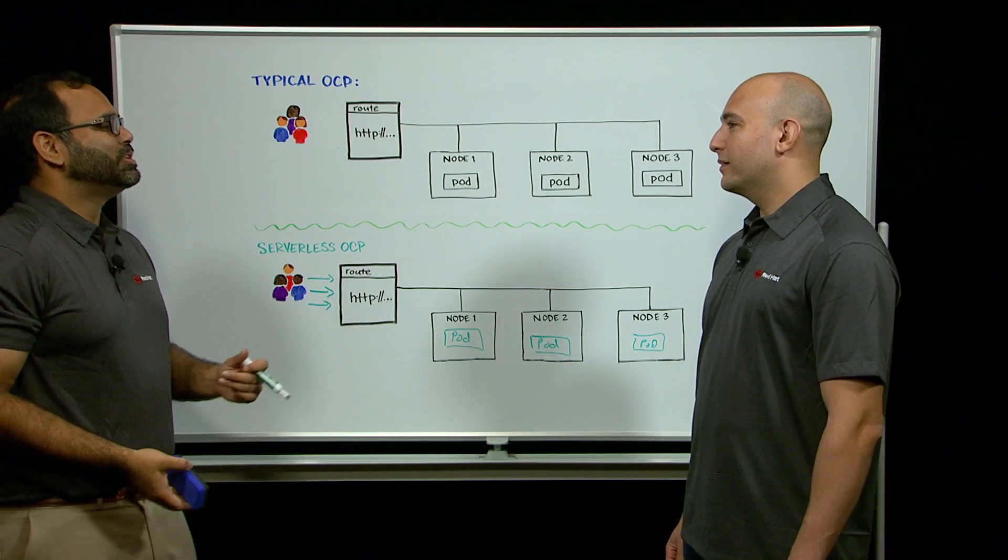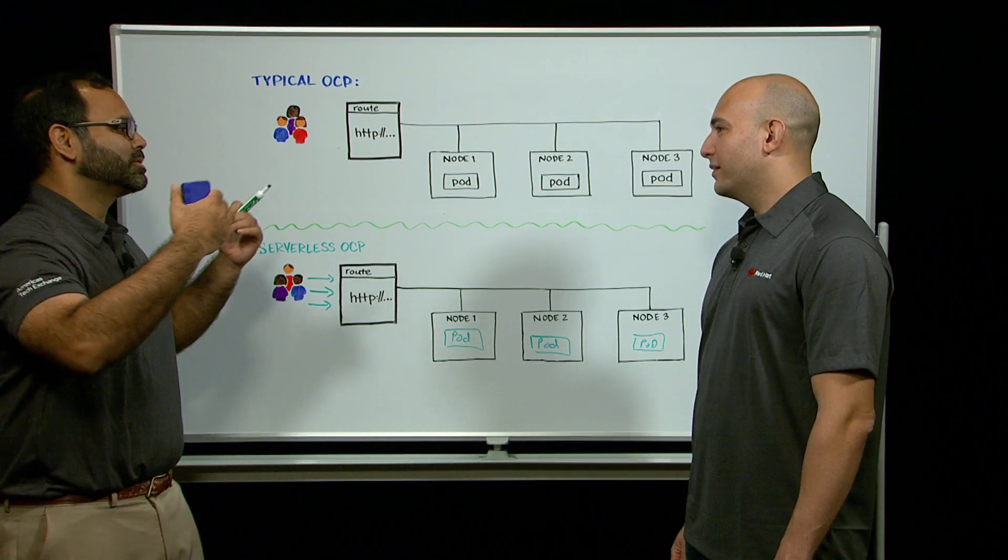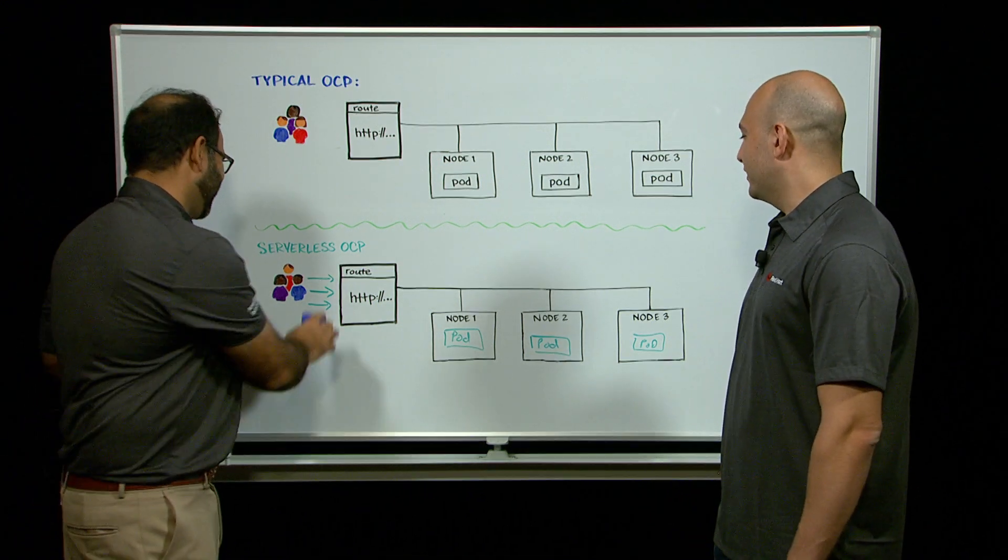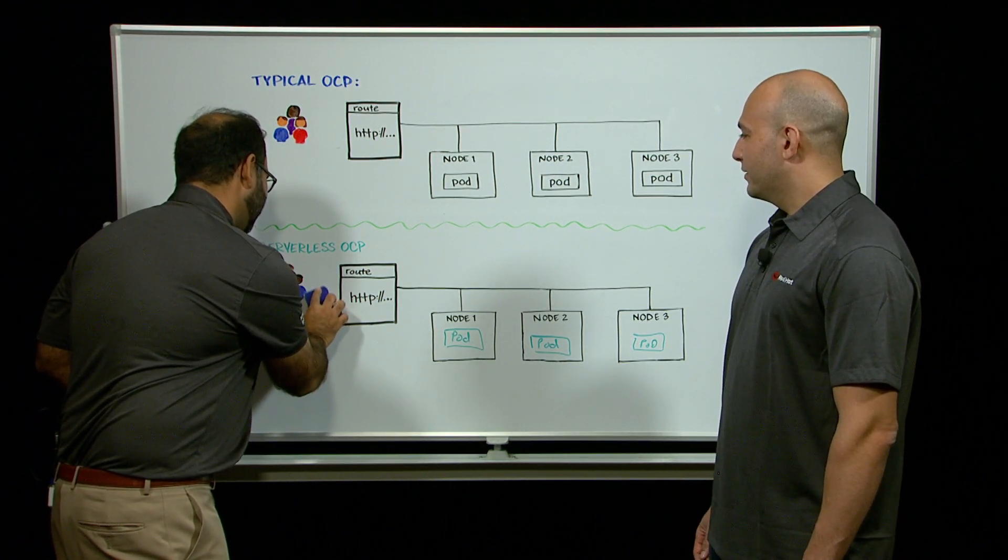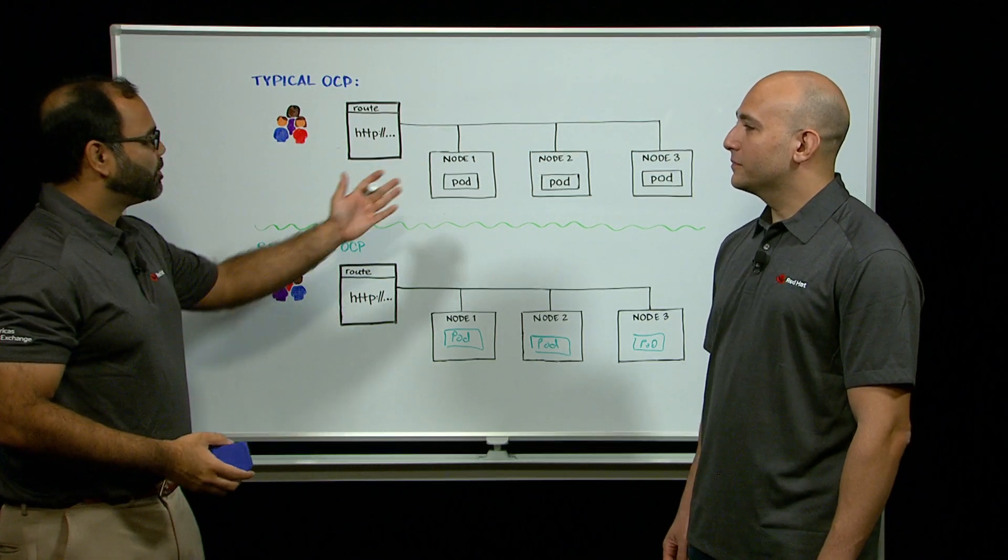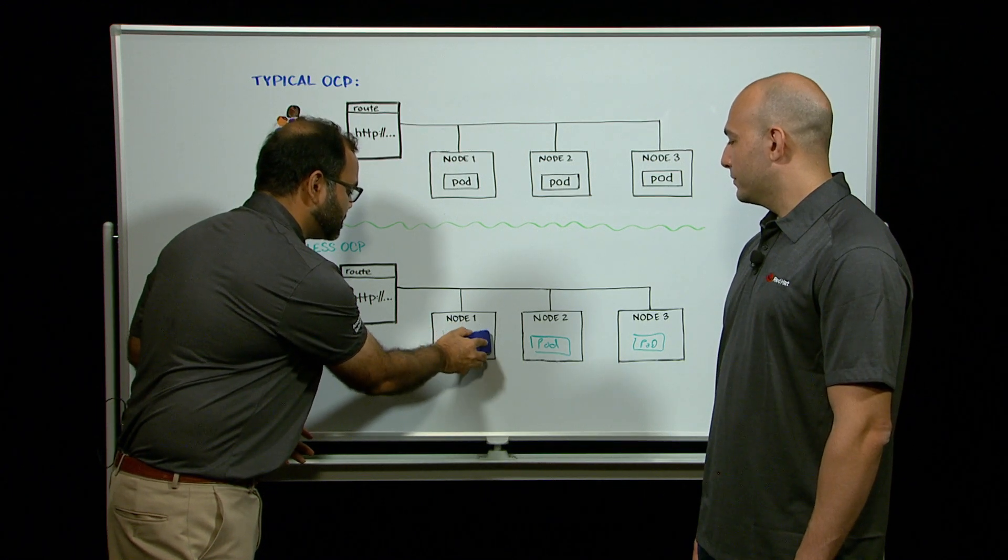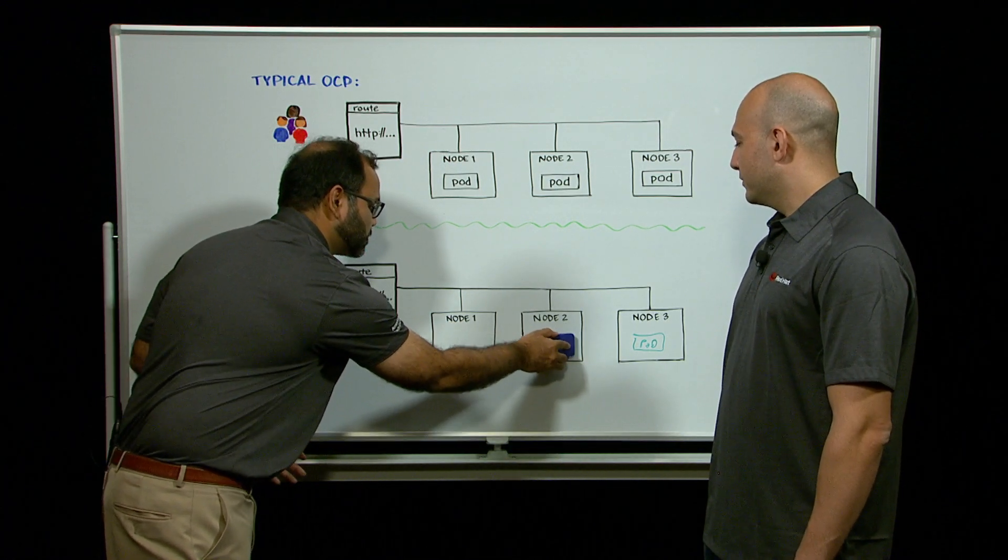But then, what if we start hitting the part of the day when users stop using the system, and we see no traffic. What's going to happen? Right? So we lose all this traffic. Now, in our typical OCP app, the pods stay there. In our serverless app, OpenShift handles all the scaling, so it determines these pods are sitting here just hogging resources,